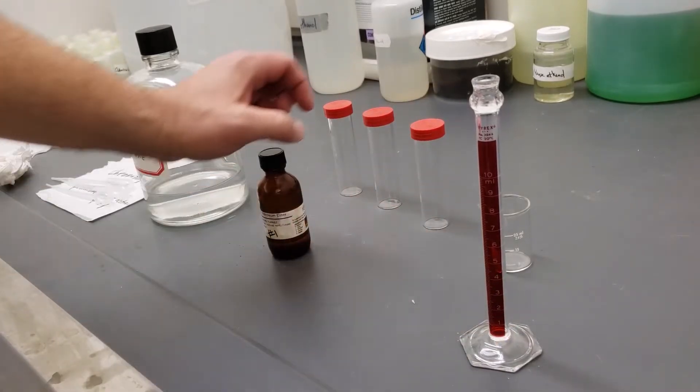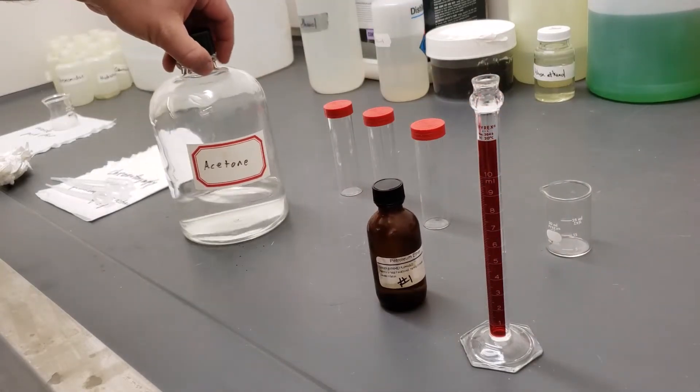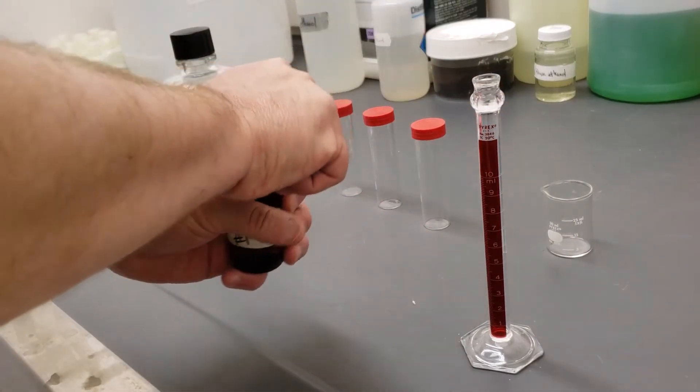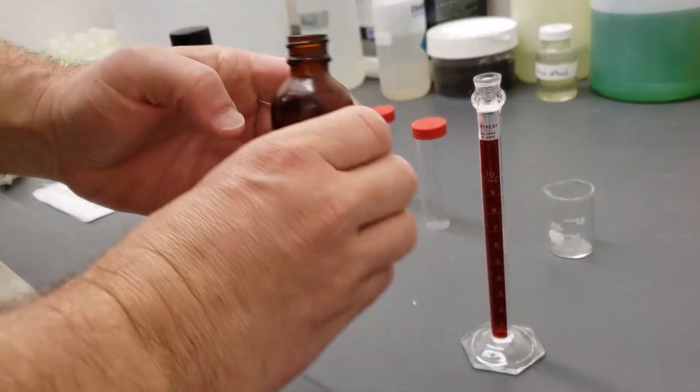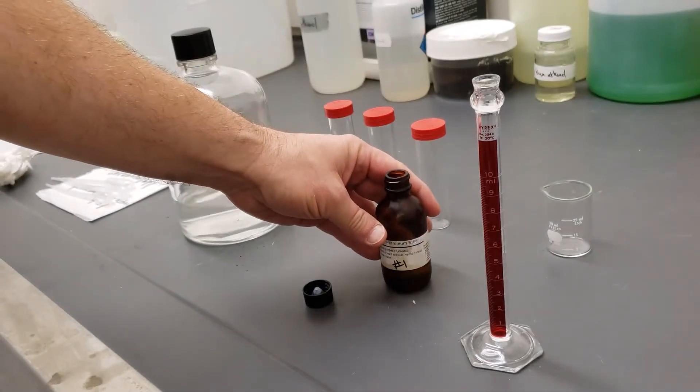So I have my graduated cylinder here, my petroleum ether and my acetone. I want to mix a nine to one mixture of petroleum ether with acetone.